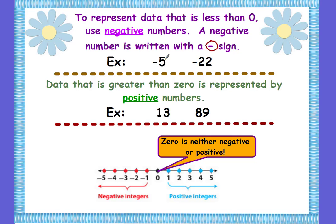The negative symbol is in front of the number, or to the left of the number. We don't write it like this — this would be 5 minus, and then you're missing something that you're subtracting. So if you want it to be a negative, the negative symbol has to be to the left or in front of the number.